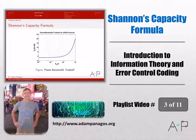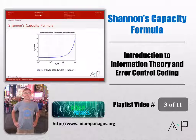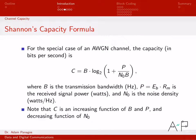Let's take a look at a specific instance of capacity for the AWGN channel. We'll actually be able to write down a mathematical equation for it. This equation is often referred to as Shannon's capacity formula because this is one of the results that he derived for the AWGN channel. So for the special case of an AWGN channel, the channel capacity can be written as follows.